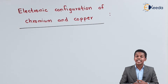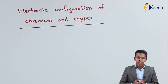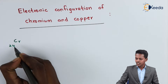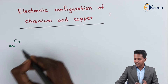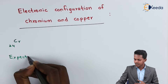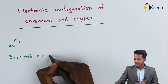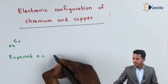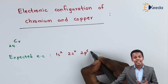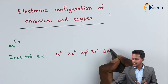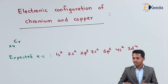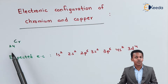Let us talk about the electronic configuration of Chromium first. Chromium has an atomic number of 24. So let us write the electronic configuration. The expected electronic configuration is: 1s2, 2s2, 2p6, 3s2, 3p6, 4s2, and 3d4. This is the expected electronic configuration of Chromium.